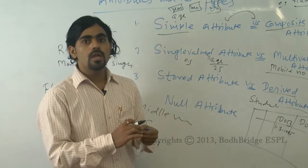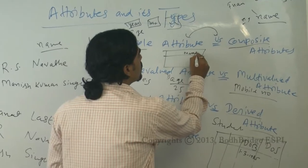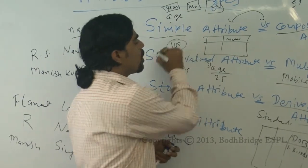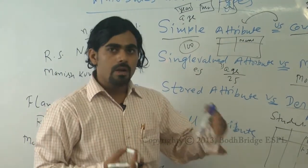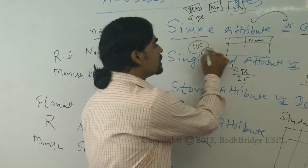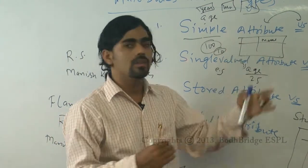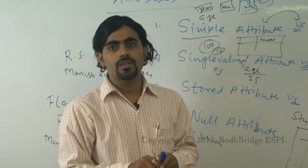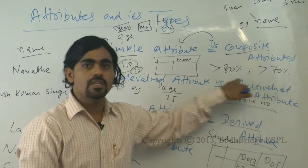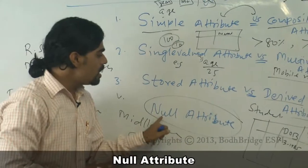Another example: a university declares student marks. The stored attribute is the total marks record. From that, you can derive how many students scored more than 70% or 80%. The university stores only the raw results; the extracted percentages and categories are derived attributes, which can also be used to declare prizes.